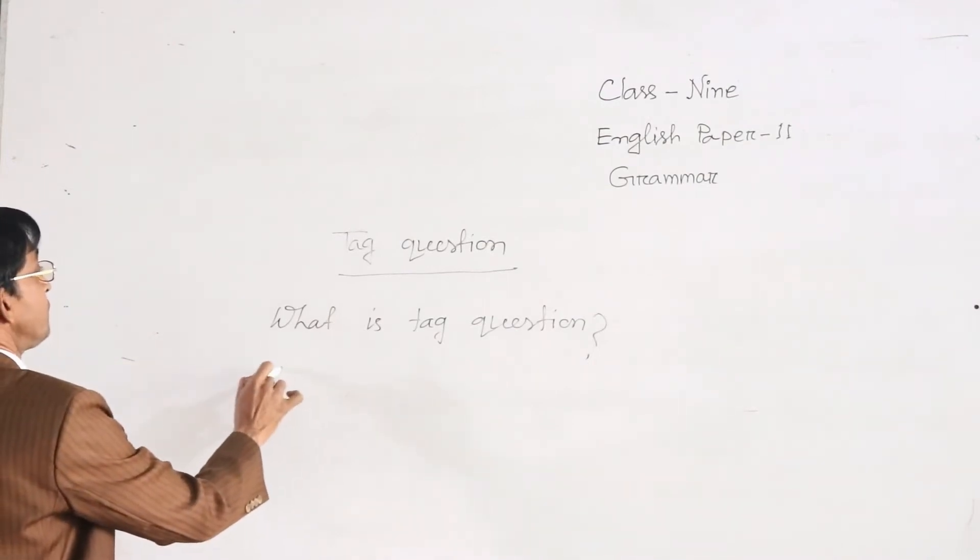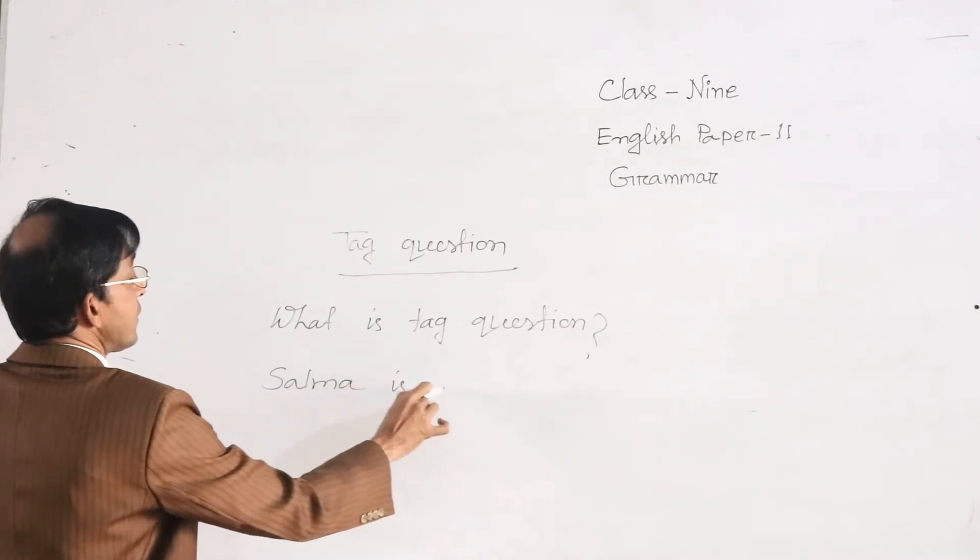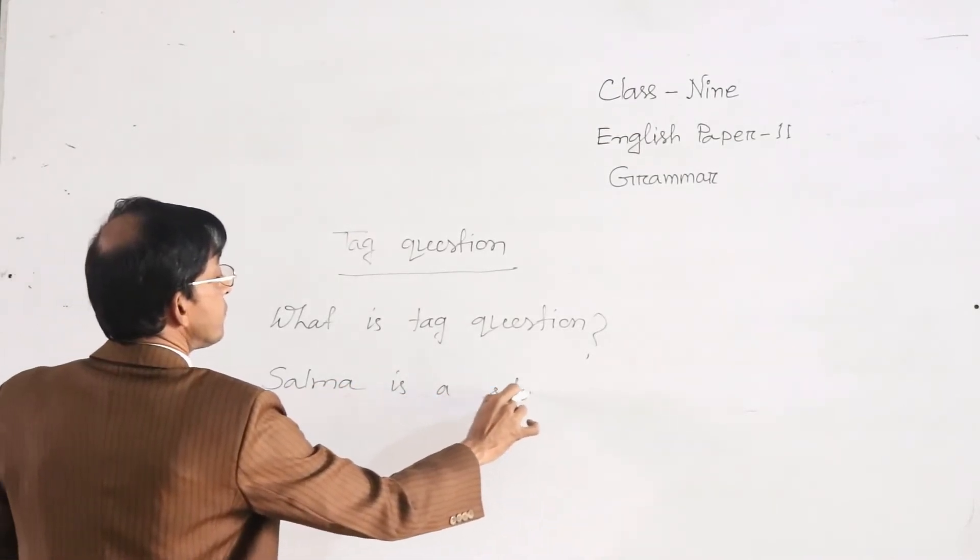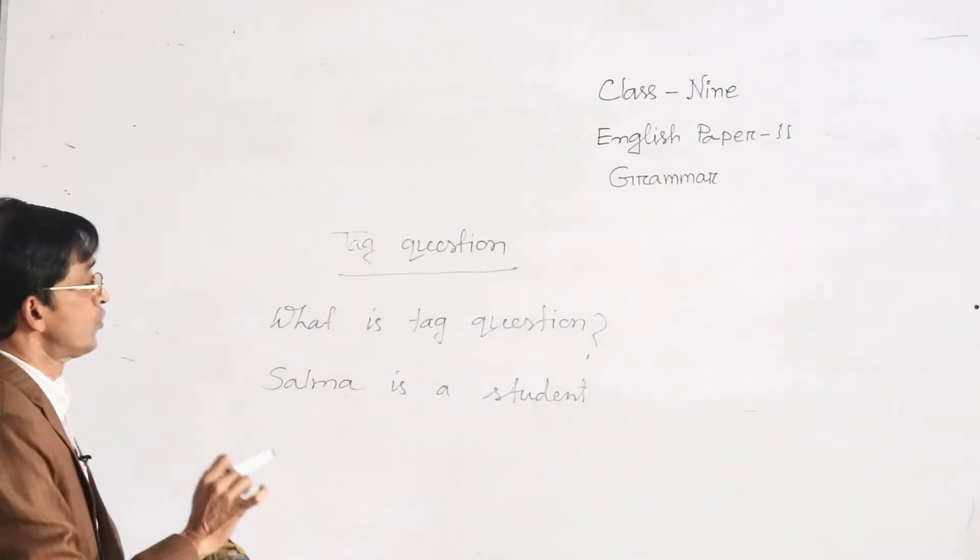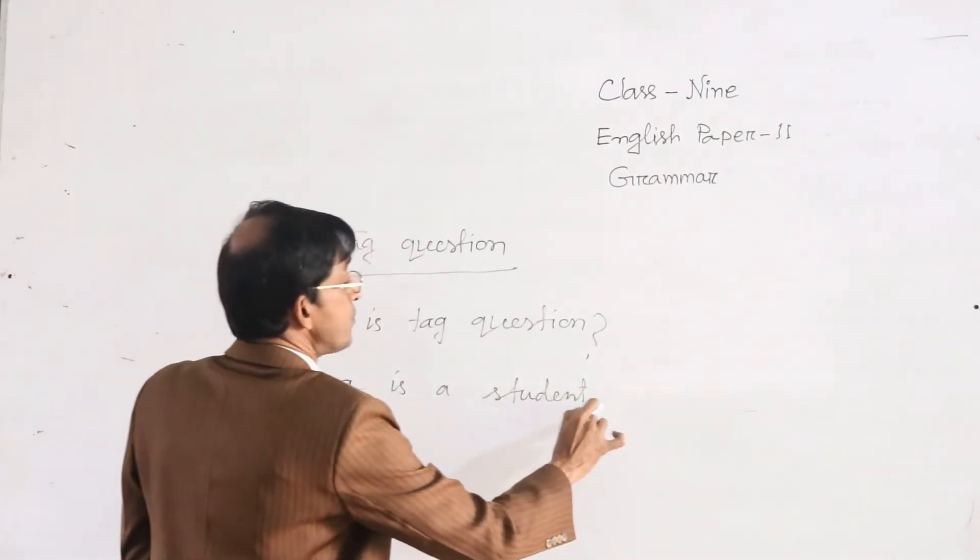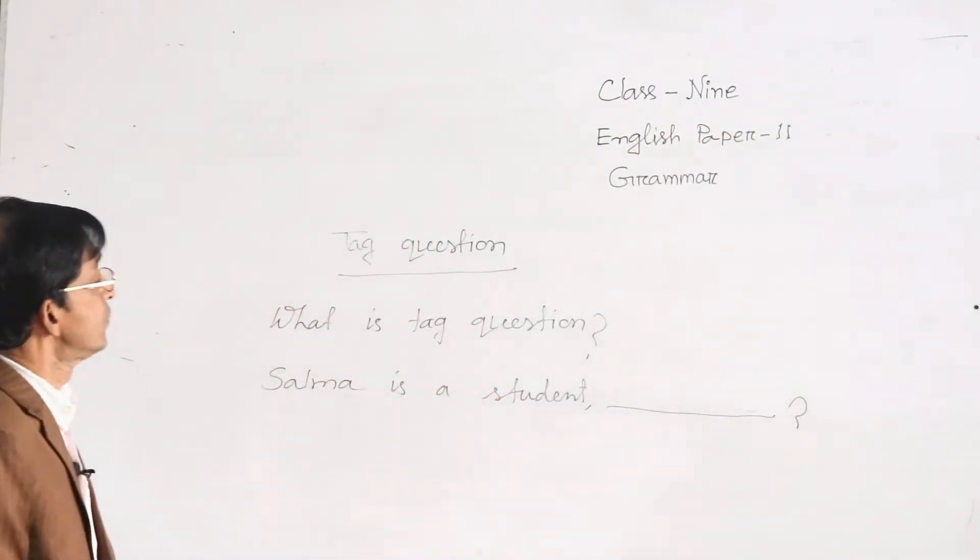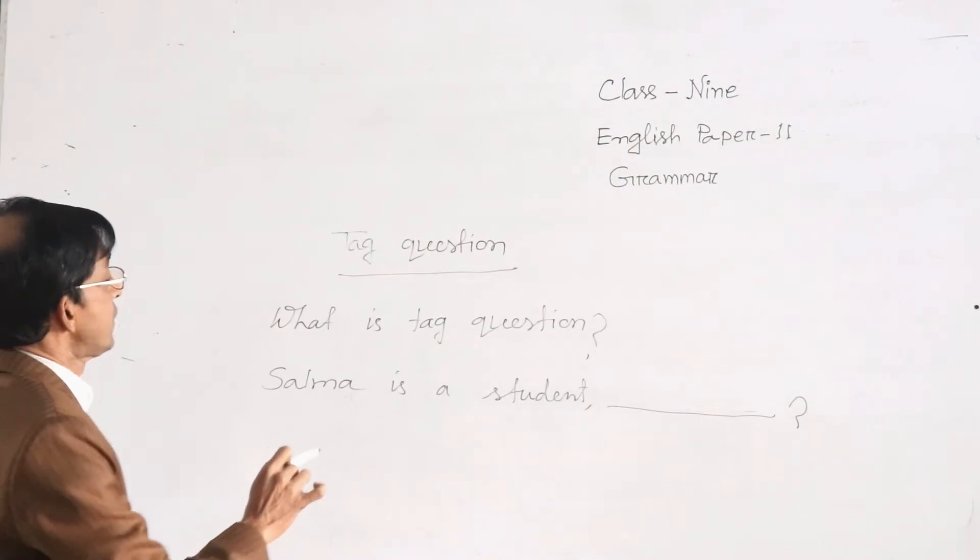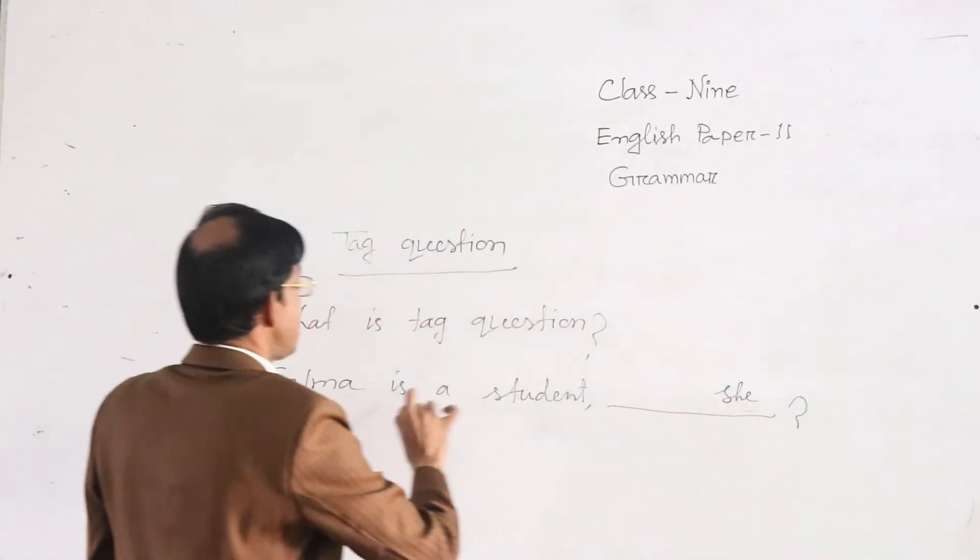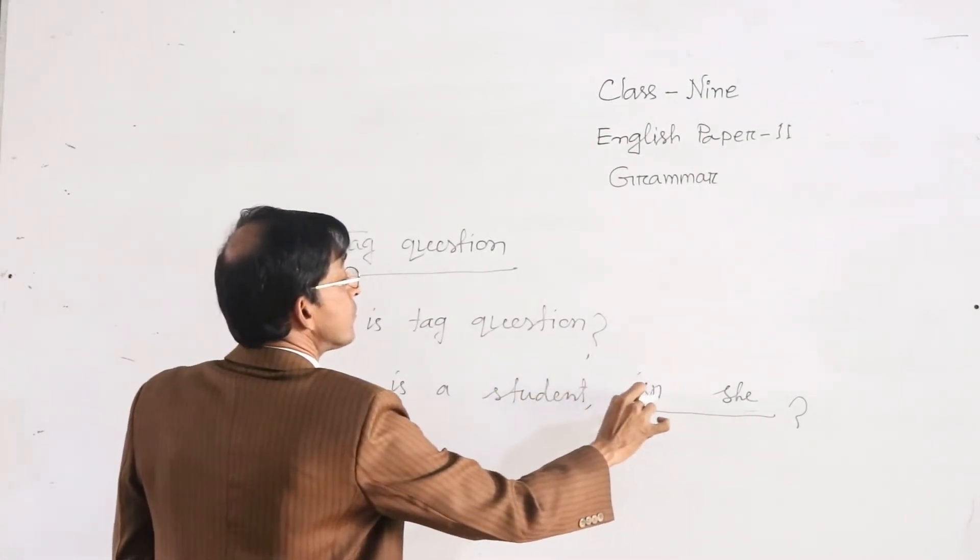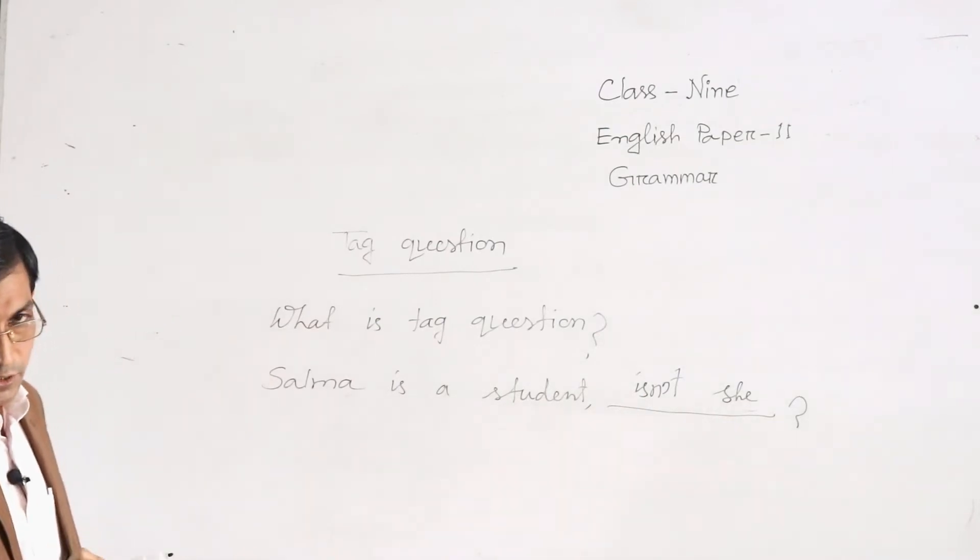As for example, Salma is a student. Actually, Salma is a student. To know this, we may ask Salma is a student, isn't she? Here Salma is she, and auxiliary is, contacted from is and she. This is a tag question.